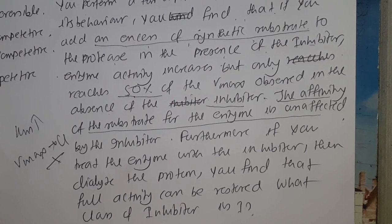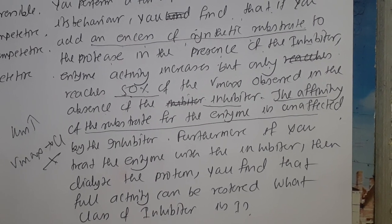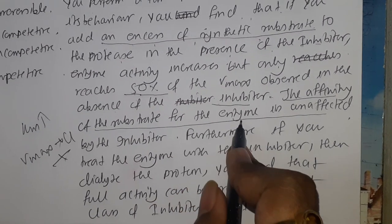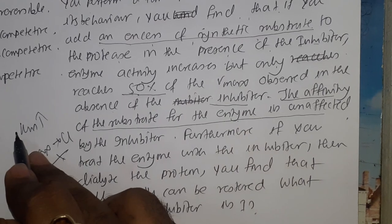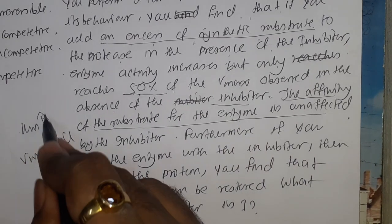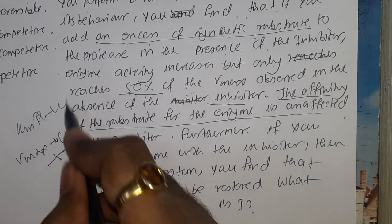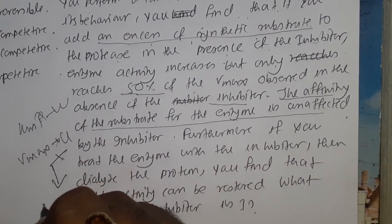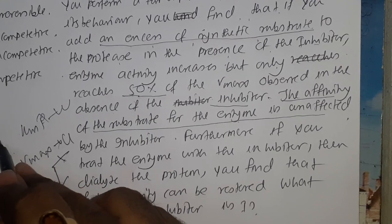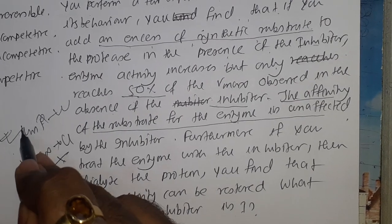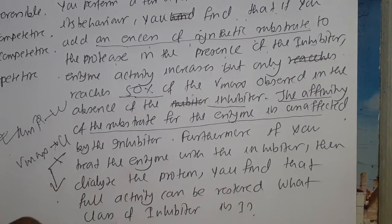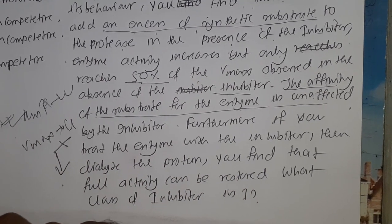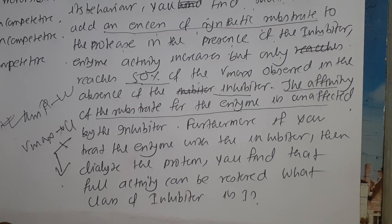If KM's value is increased, then affinity will decrease. So since affinity is unaffected, it means KM is unaffected, but VMAX is decreased. So which situation does this correspond to? Our non-competitive inhibitor.